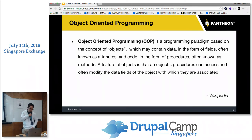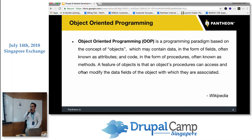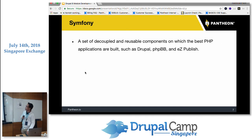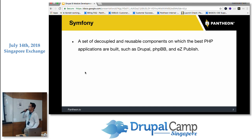Drupal 8 uses object-oriented programming and the MVC pattern — model, view, controller. It makes most use of objects and classes now, unlike Drupal 7 which was more procedural. Drupal 8 also uses Symfony, which is a set of decoupled and reusable components on which the best PHP applications are built, such as Drupal, Laravel, and EzPublish.